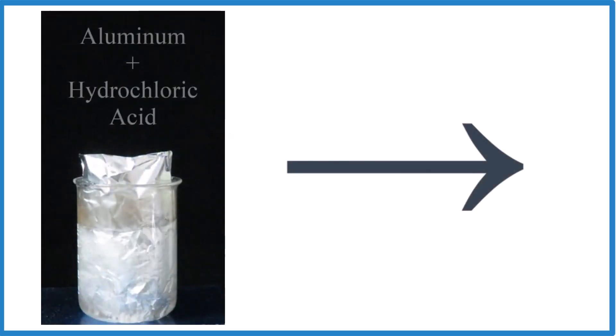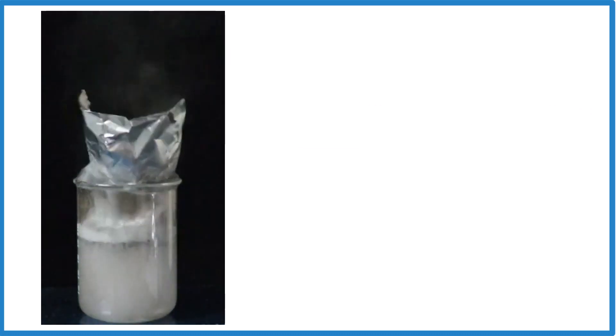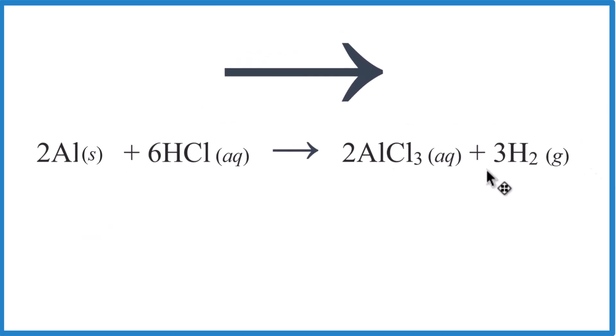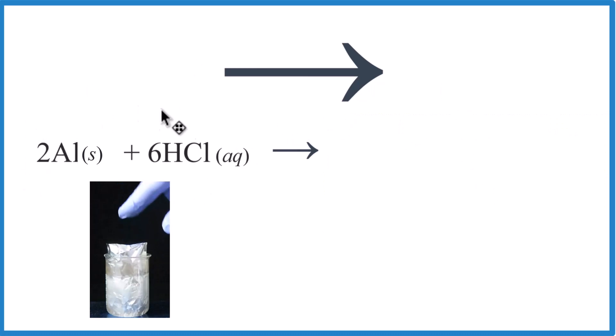So what does that arrow mean when we're talking about chemistry? What does that arrow signify or tell us? In the reaction below we have aluminum and hydrochloric acid. We start out with just that aluminum foil and the hydrochloric acid, but when I put that aluminum in the hydrochloric acid, the reaction starts.